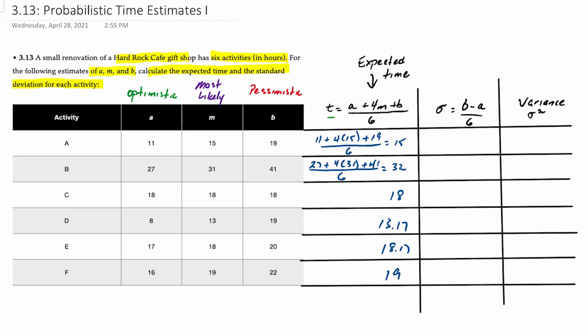Next what we want to do is calculate the standard deviation, which is also known as sigma. And that's an easy calculation. It's B minus A divided by 6.